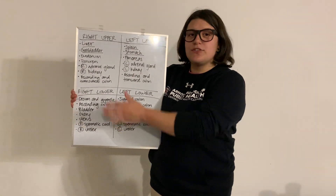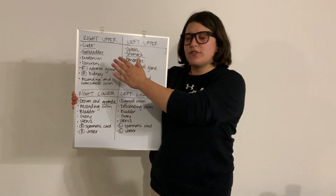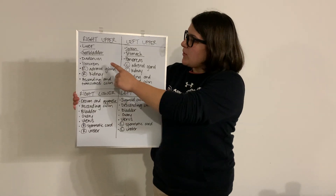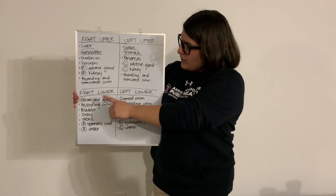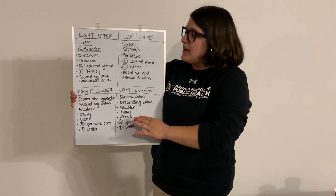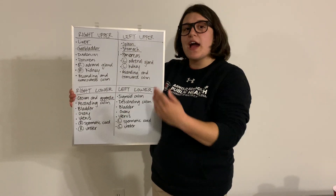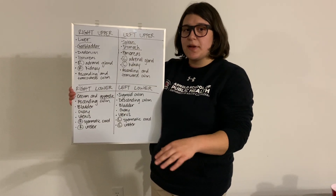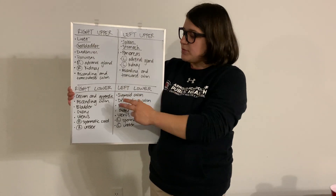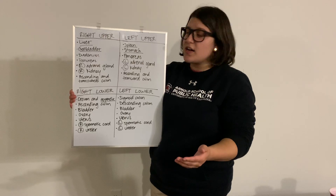I've created a chart to show you where everything is located. We've got the right upper quadrant, left upper quadrant, right lower quadrant, as well as the left lower quadrant for the abdomen. I've also underlined several of the organs because if you're having a patient experiencing any signs and symptoms of any of these rupturing, that's going to be a situation where you might need to send them to the hospital.